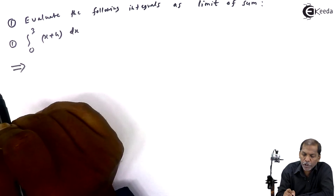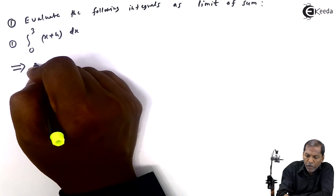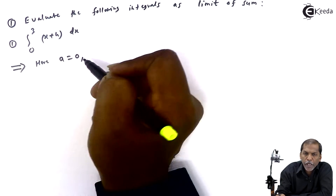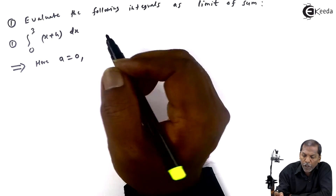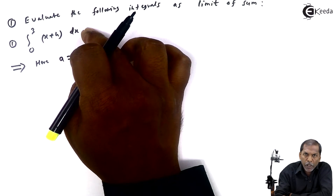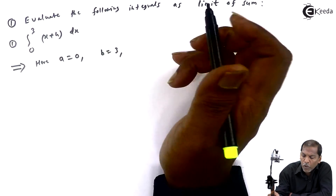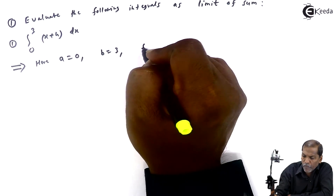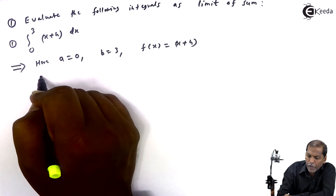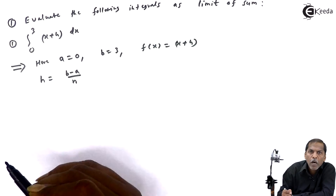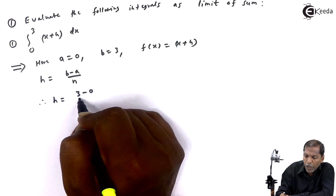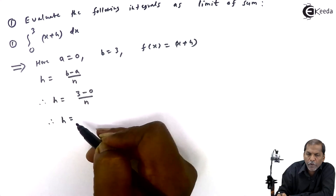First of all, we observe that the lower limit a is equal to 0 and the upper limit b is equal to 3. We write the formula: h is equal to b minus a upon n. Therefore h is equal to b minus a, replacing a with 0, so h equals 3 upon n.